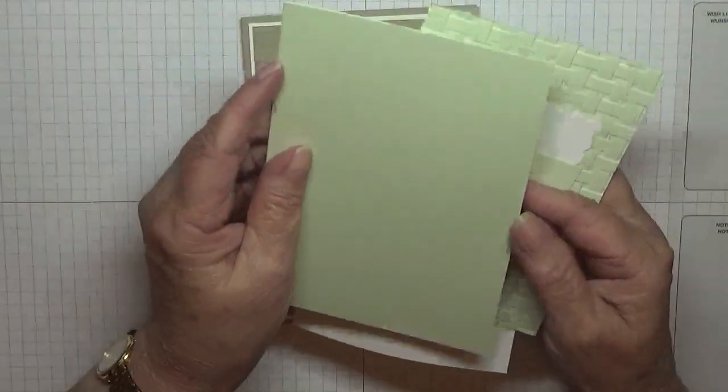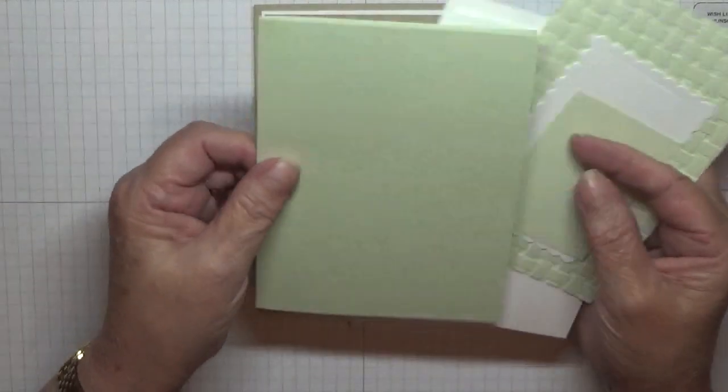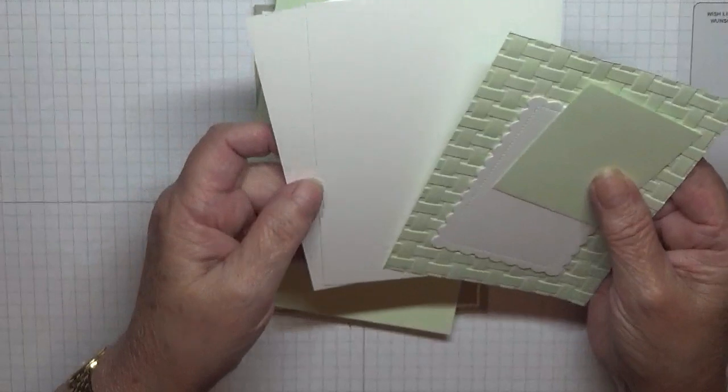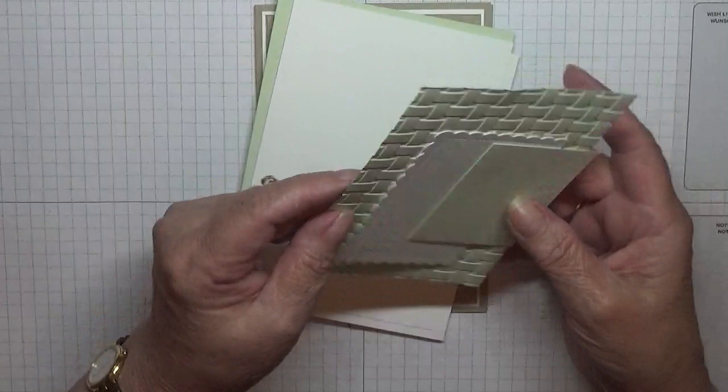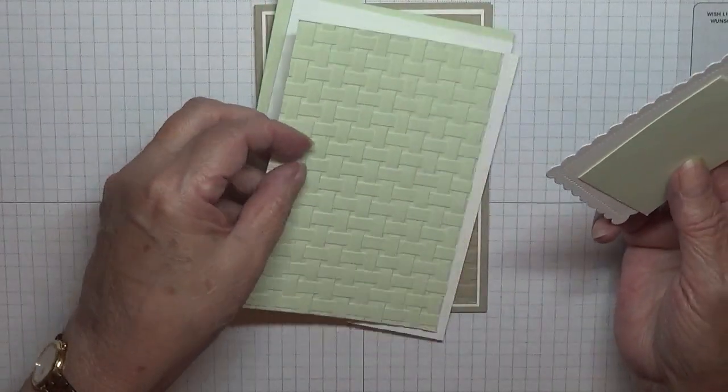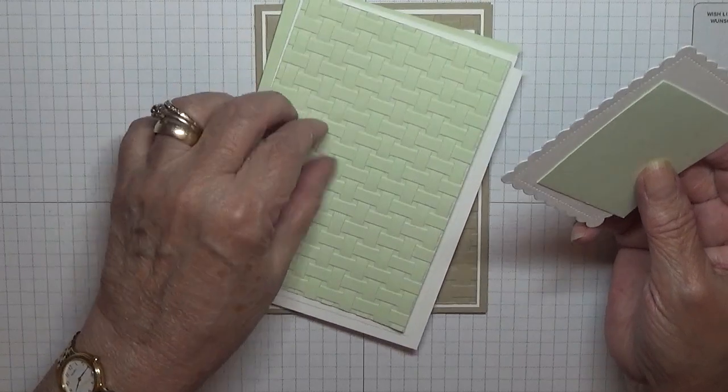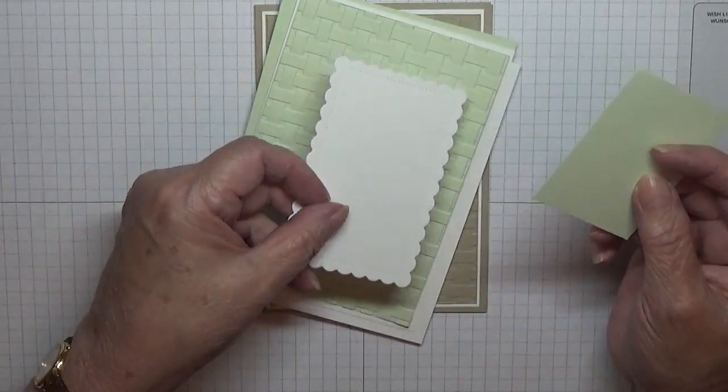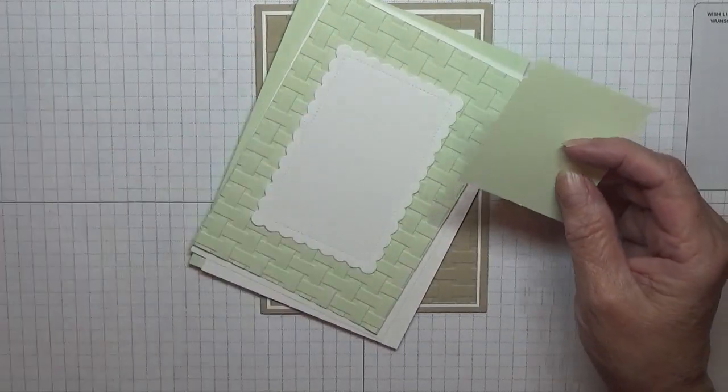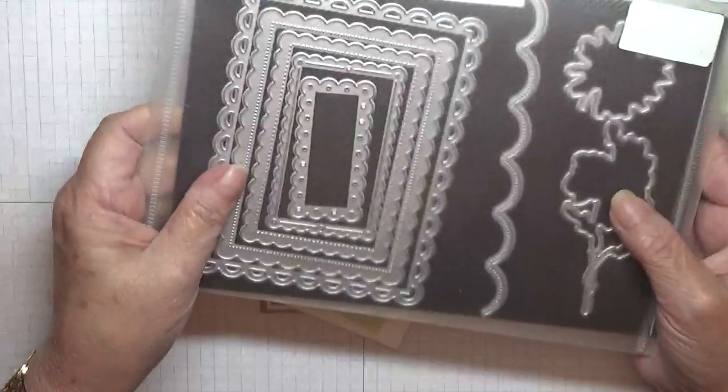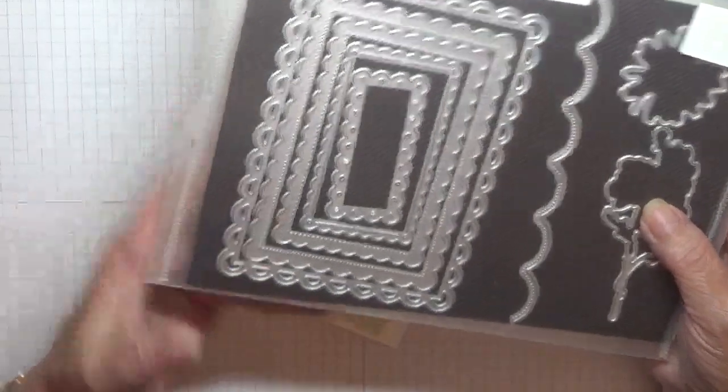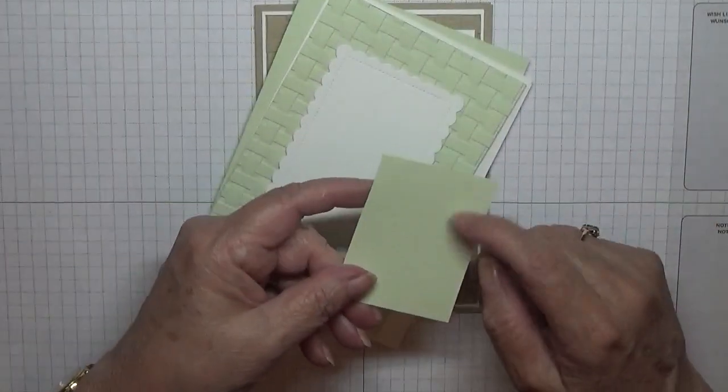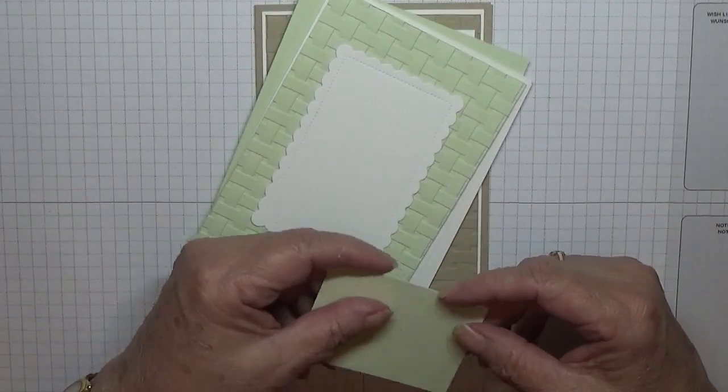I've got a card base of eight and a quarter by five and seven-eighths, scored at four and one-eighth. I have two pieces of whisper white at five and five-eighths by three and seven-eighths. I have another piece of seafoam at five and a half by three and three-quarters. I have a white cut-out from the scallop contour dies, I use the third one in, and I've got a scrap of seafoam for the sentiment.